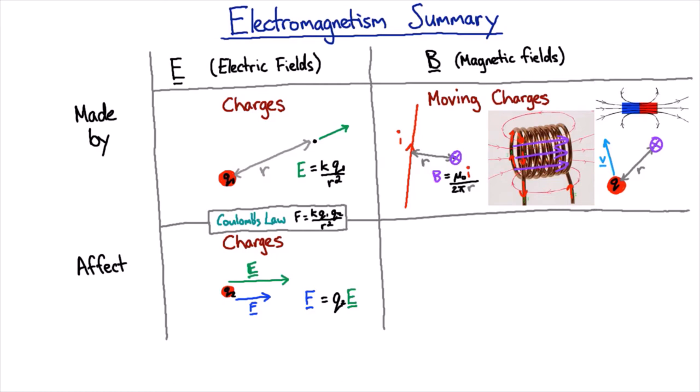But we have not yet addressed what magnetic fields do. We saw that we made electric fields from charges and we made magnetic fields from moving charges. We discovered that electric fields apply forces to charges, and so it might be unsurprising to discover that what magnetic fields do is they apply forces to moving charges.